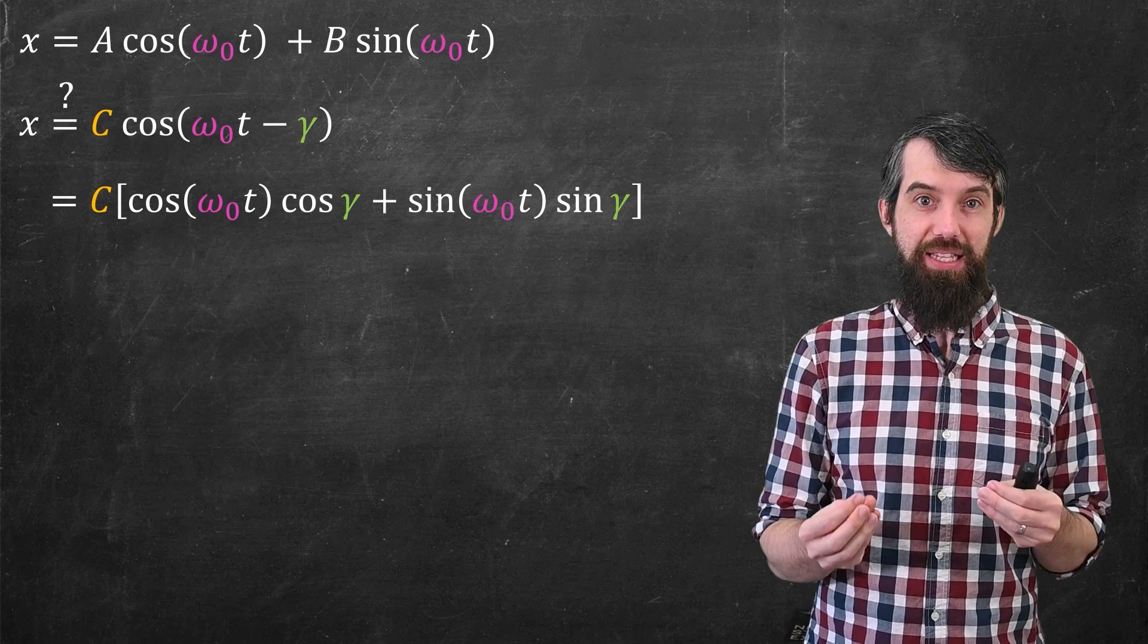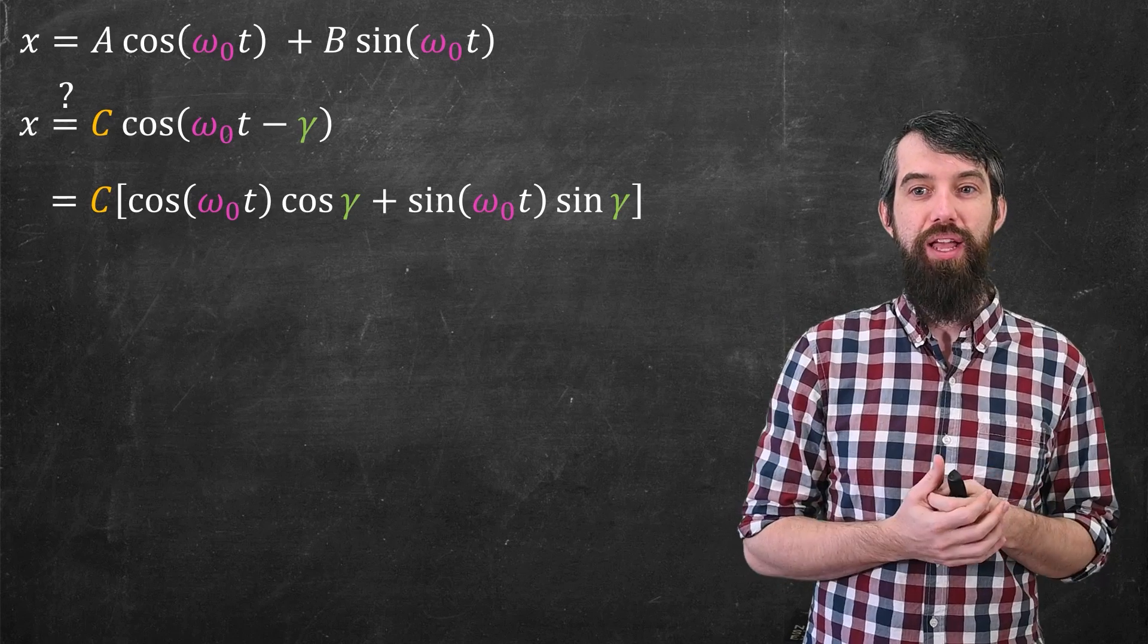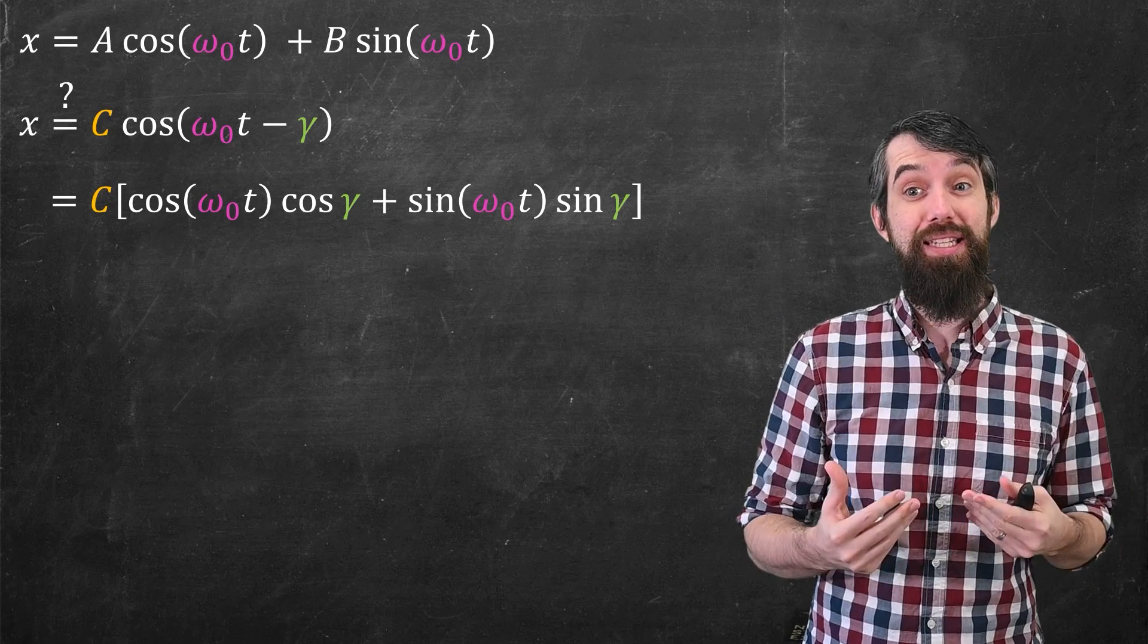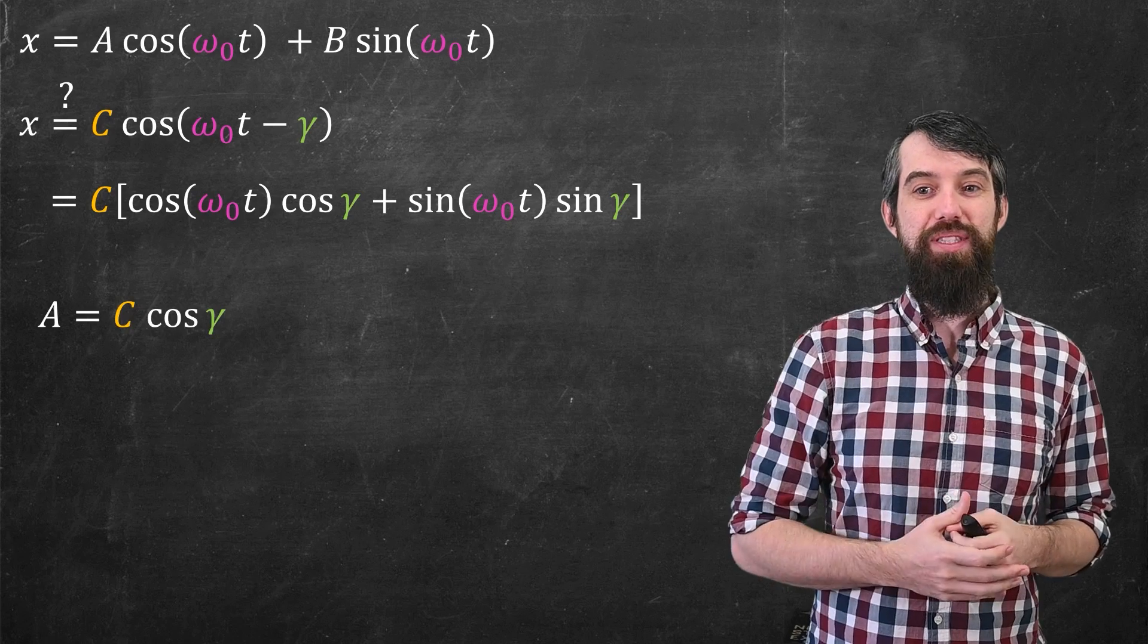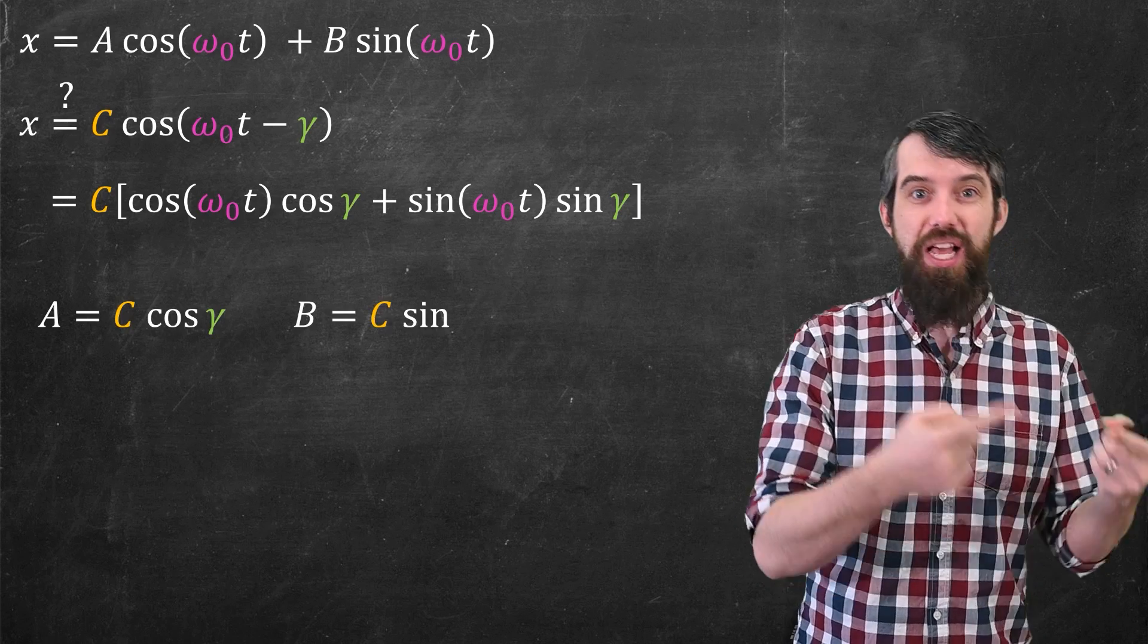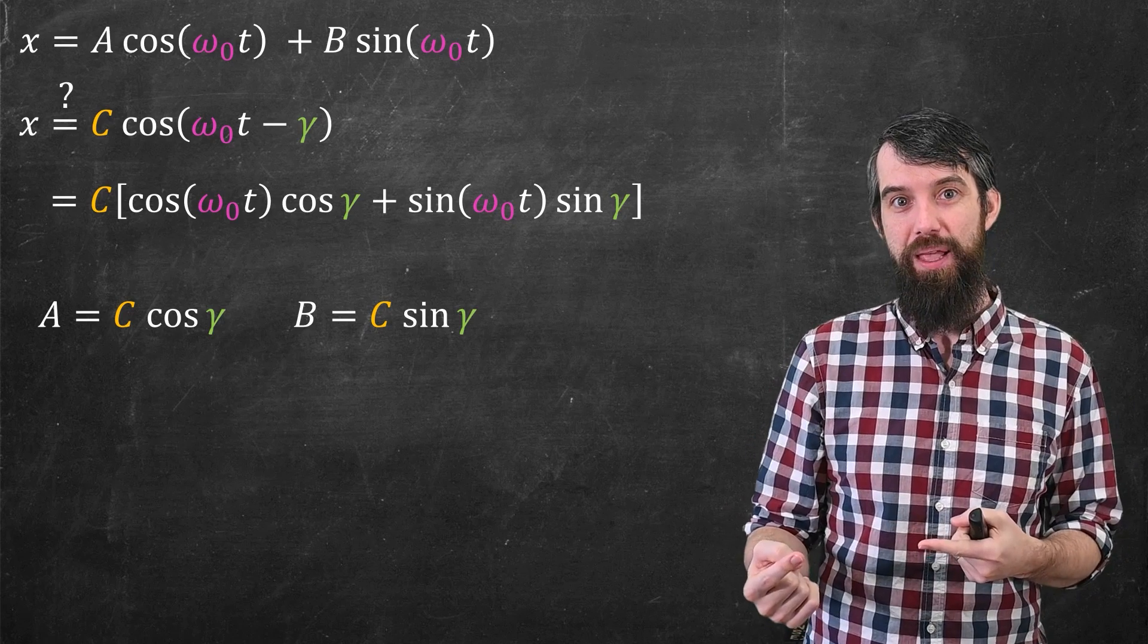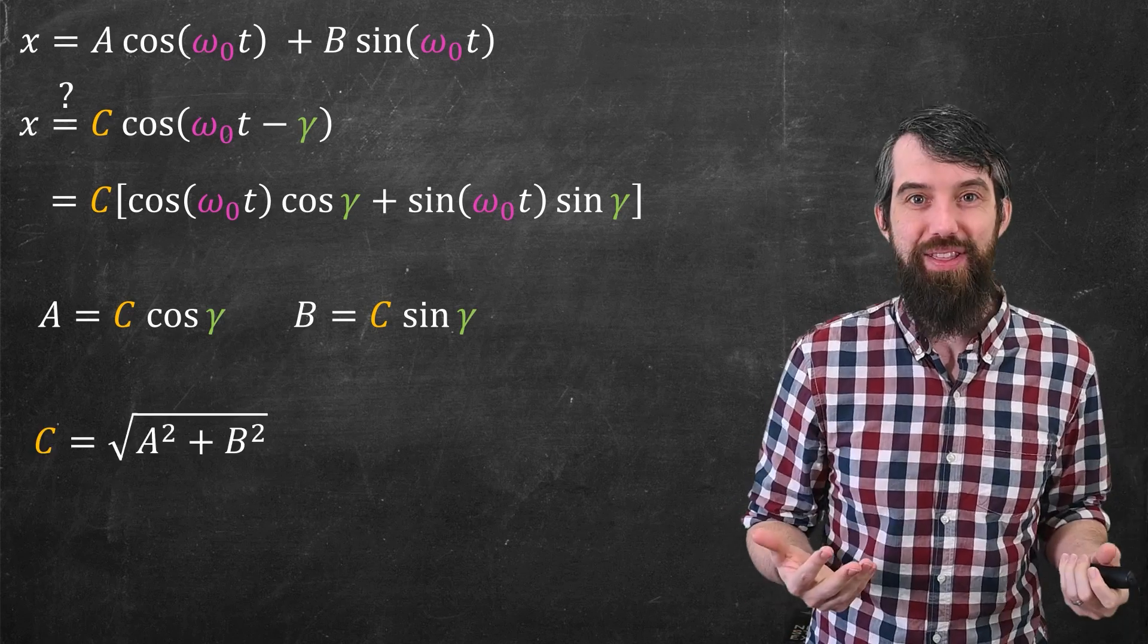And so if I compare this to the original, well, for example, there's a cos(ω₀t) in both two places, but I get these relationships that A then would be C times cos(γ), and B would be C times sin(γ). And now it's just a question of solving for everything.